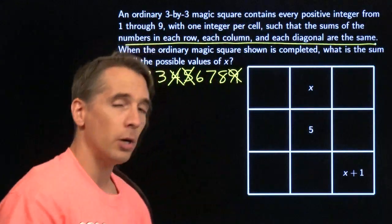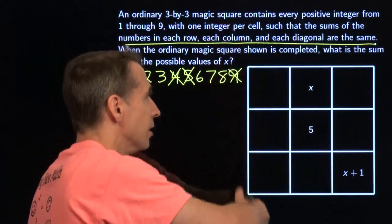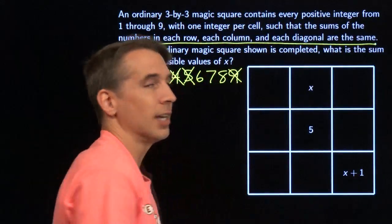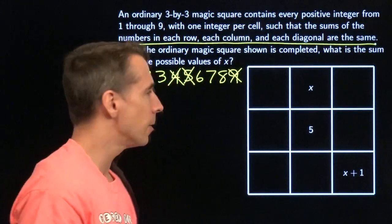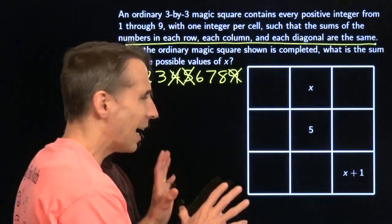That means each of these rows has to add up to 15. Each of the columns adds up to 15, each of the diagonals. We just take that whole 45, divide it by 3 for the 3 rows. But how do we use that?